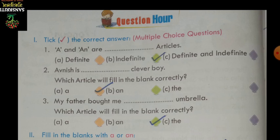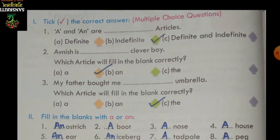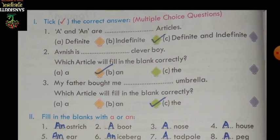Question number one: tick the correct answer. What you have to do is put a tick on the correct answer. First one: 'a' and 'an' — what kind of articles are these? Are they definite, indefinite, or both definite and indefinite? They are indefinite articles. So tick 'indefinite articles'.